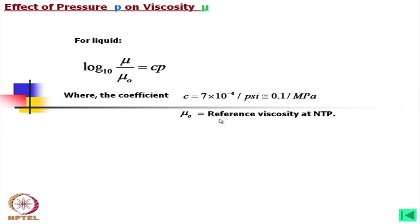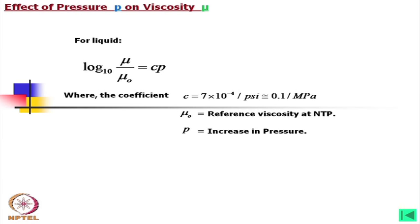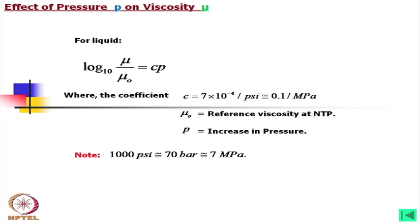Here p is the increased pressure. A useful tip: in many cases pressure is expressed in bar or psi. To convert to megapascals, for a fluid power engineer it is very important to remember that 1000 psi is almost equal to 70 bar, which equals 7 megapascals, or 7×10⁶ pascals.